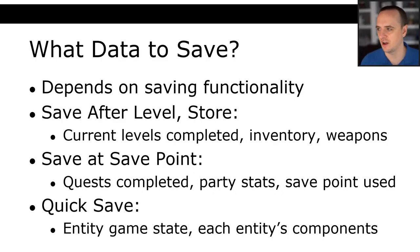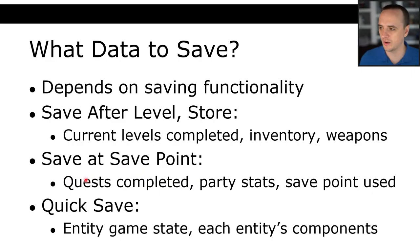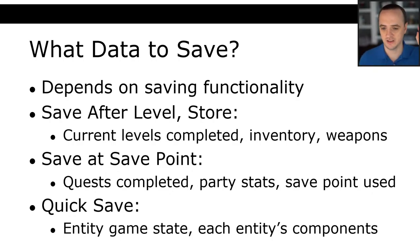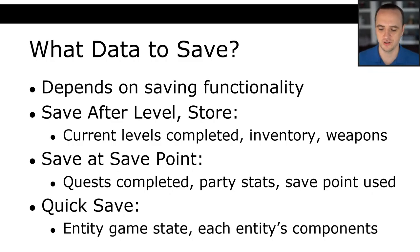What data you actually save depends on the saving functionality. If saving after a level, you might save completed levels, the level number, and current inventory or weapons. At a checkpoint, you might also save quests completed, party stats, and which save point was used. With quick save and quick load, you have to store the entire game state — a snapshot of the scene with all entity positions. You can just copy the scene and later overwrite the current scene with the saved copy. Depending on how your engine is implemented, quick save may actually be the easiest thing to implement.